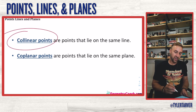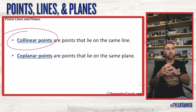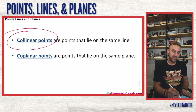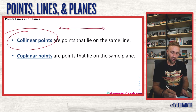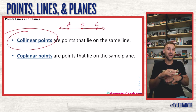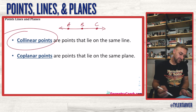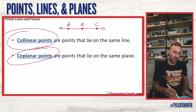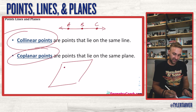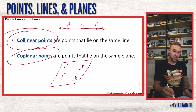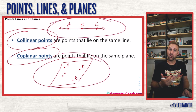Collinear points means that there is a line and all the points are on that line — like a co-pilot in the same cockpit. So points A, B, and C are collinear because they are all on the same line. Coplanar is exactly what you think — points that are on the same plane. So if points A, B, C, and D are all on the same plane, they are all coplanar.